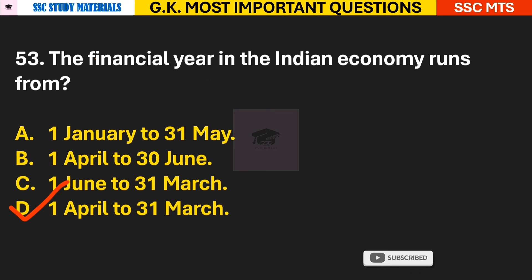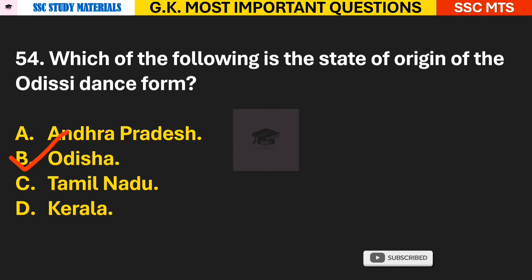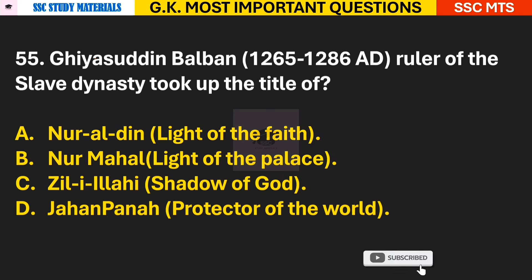Question 53: The financial year in the Indian economy runs from when to when? Answer D — it runs from 1st April to 31st March. Question 54: Which of the following is the state of origin of the Odissi dance form? Answer B — Odisha (Orissa).